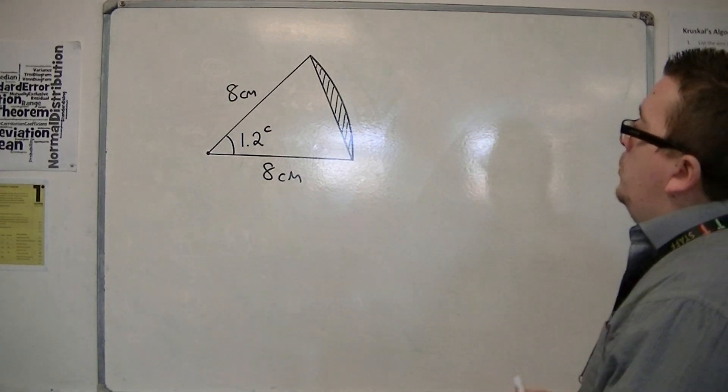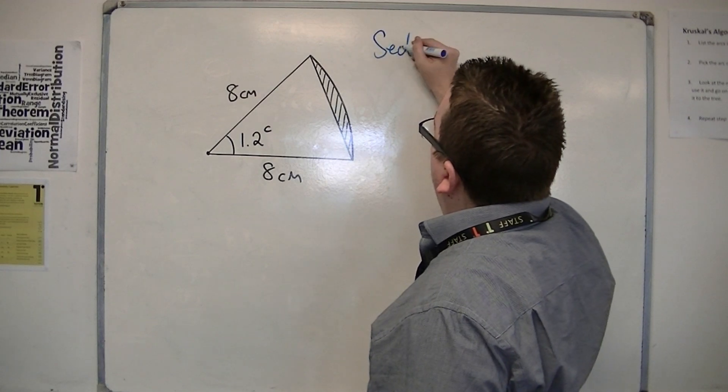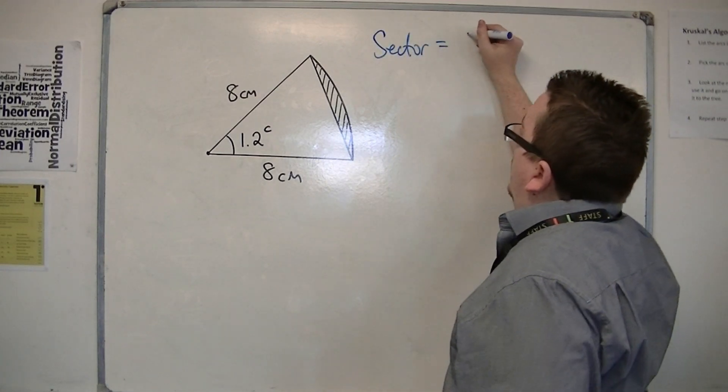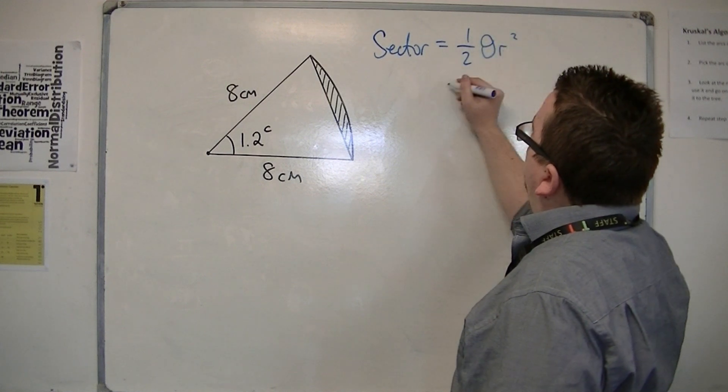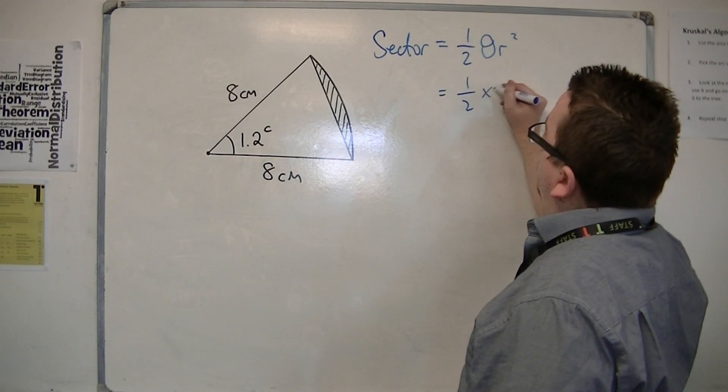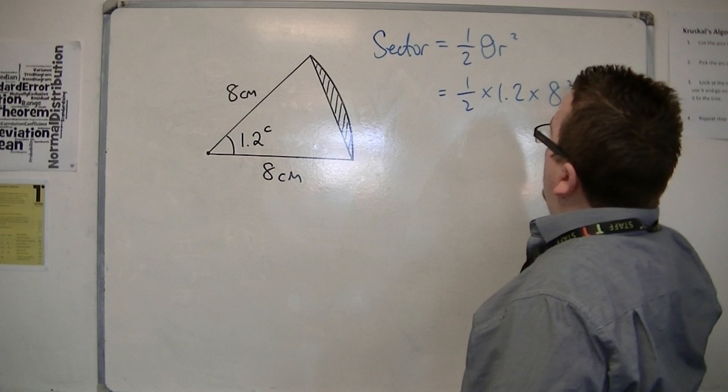So I want the area of the sector using the formula half theta r squared. So that's one half times 1.2 times 8 squared.